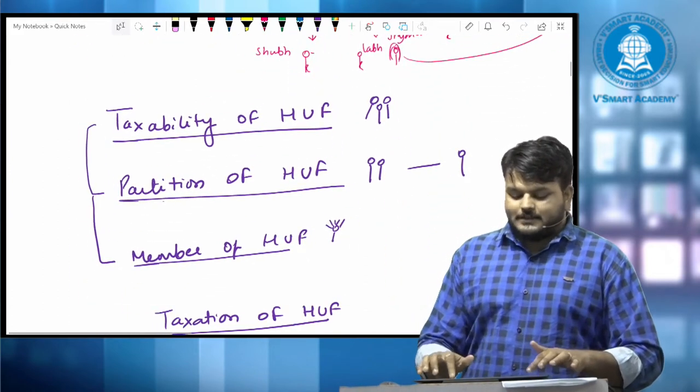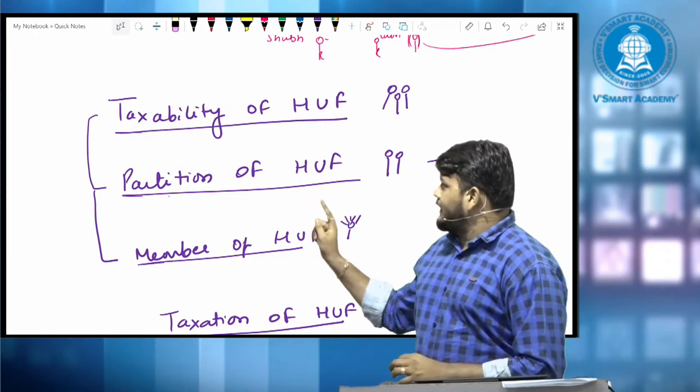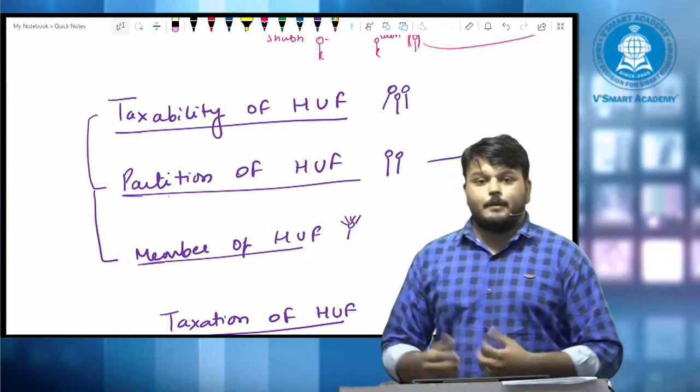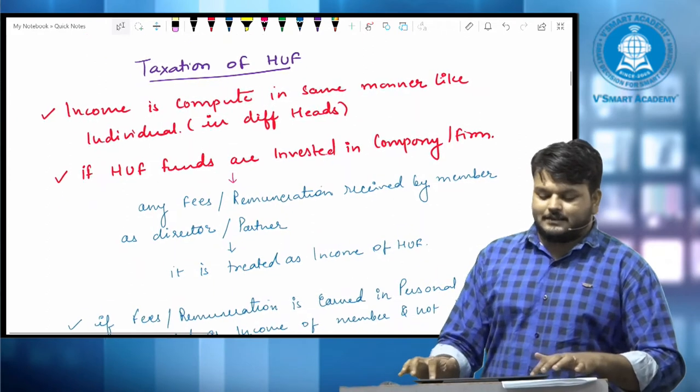Most important, we need to read this chapter in three parts. Taxability of H.U.F., Partition of H.U.F., and income of member of H.U.F. Let's first talk about H.U.F. taxability.